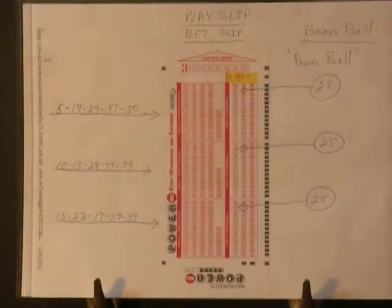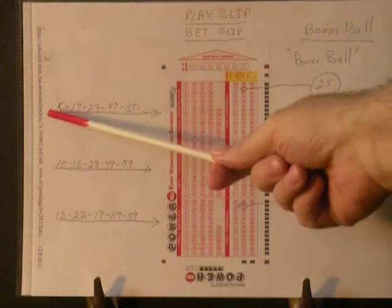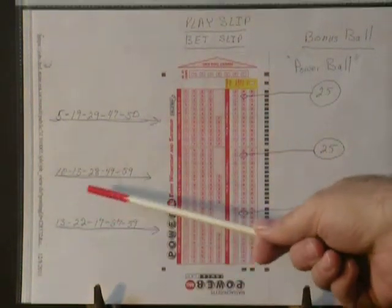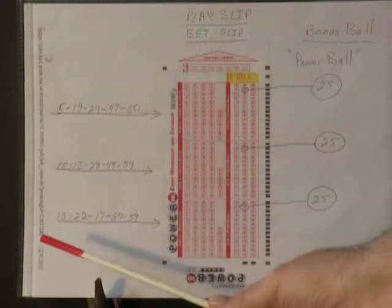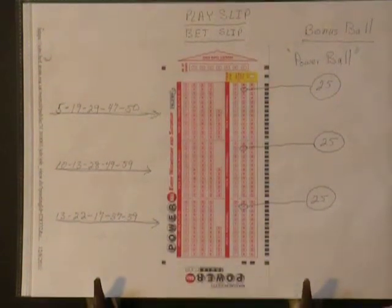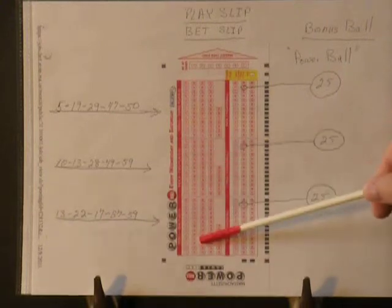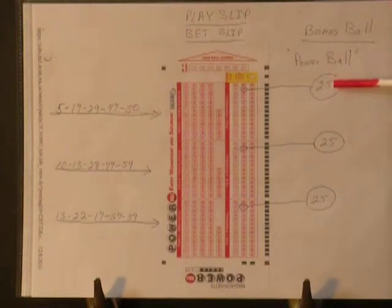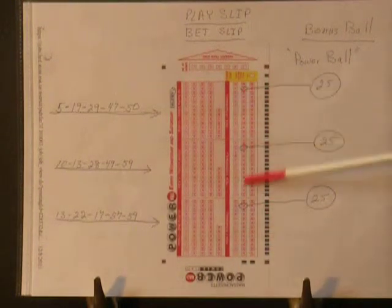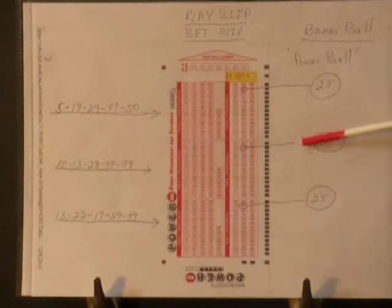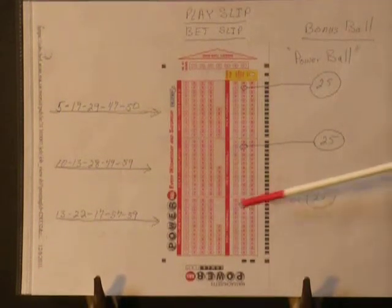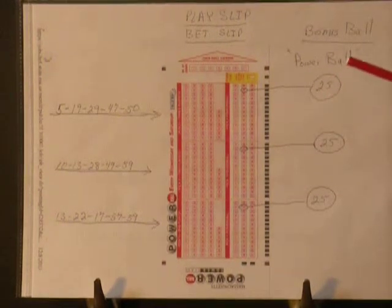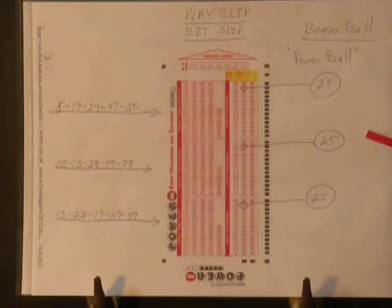And our third bet slip. Again, the same three five-number sets: 5, 19, 29, 47, 50; 10, 13, 28, 49, 59; and 13, 22, 17, 57, 59 — all three sets go into sections 1, 2, 3. Now in the bonus section, all the numbers are going to be 25: 25 in the first, 25 in the second, 25 in the third. The reason we do this is we pick three bonus numbers, and this way we have a better chance of hitting the bonus number.